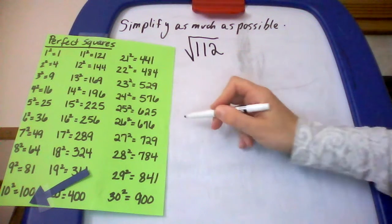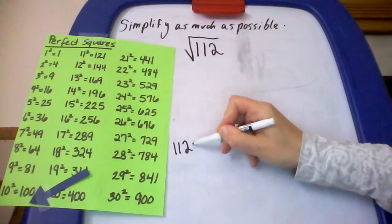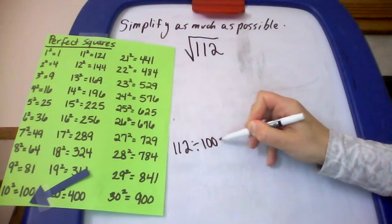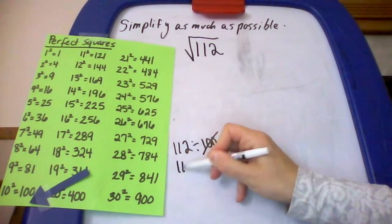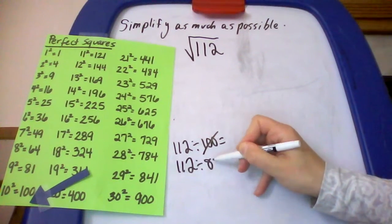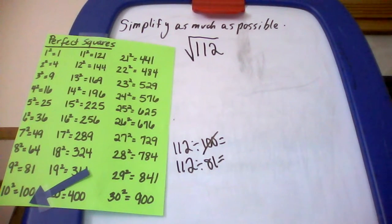So I'm going to show some work down here. I'm going to take 112. I'm going to divide by 100. When I do this division, I don't get a whole number, so I'm going to keep on going. I'm going to do 112 divided by 81. I don't get a whole number, so I'm going to cross that one off.